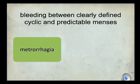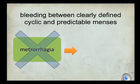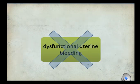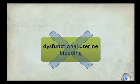Metrorrhagia, referring to bleeding between clearly defined cyclic menses, should not be used anymore; instead we use the term intermenstrual bleeding. The term DUB, previously used as a diagnosis when there was no systemic or locally definable structural cause for AUB, is not included in the new system and should be abandoned. It used to be considered a wastebasket diagnosis for non-organic causes of AUB.